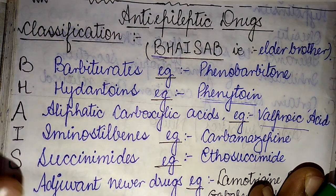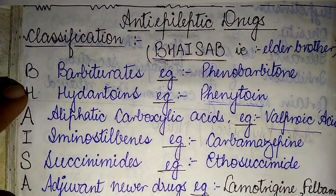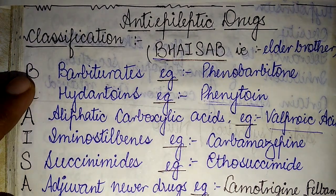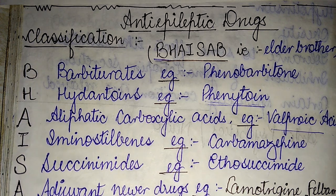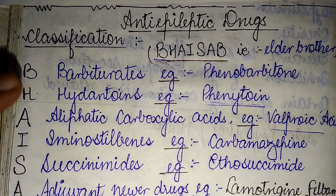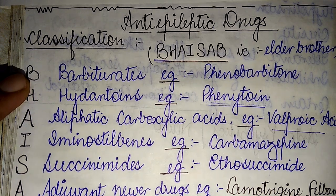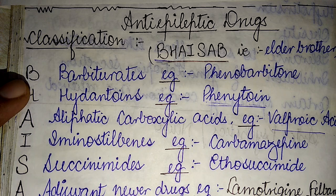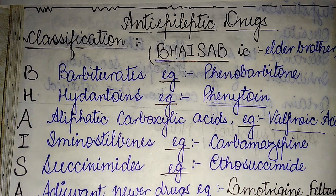The classification begins with B of BHAISA. Starting with the first category of drugs used in epilepsy — the barbiturates. The best example of such compounds is phenobarbitone.